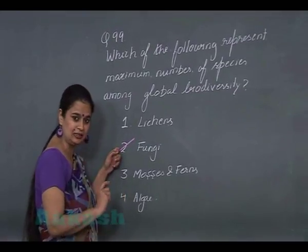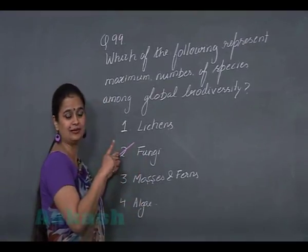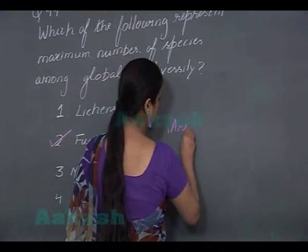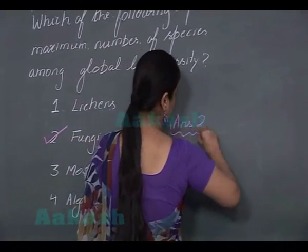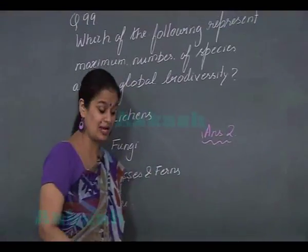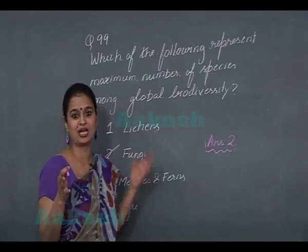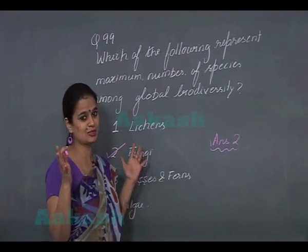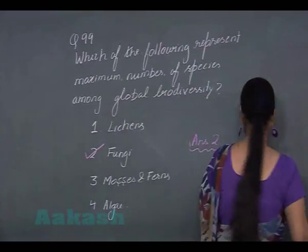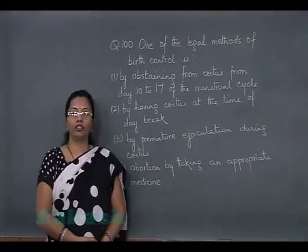After fungi it is algae, then mosses, ferns and allies, and then lichens. For question 99 the right option is option number 2 — fungi — since the diversity present in fungi is even more than 5 million species.